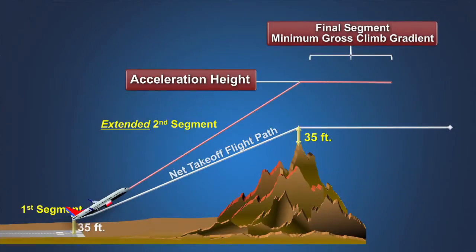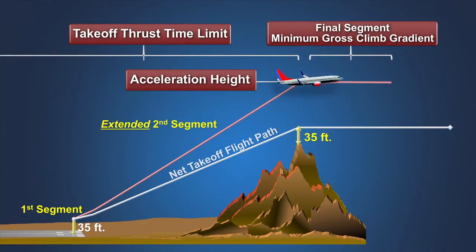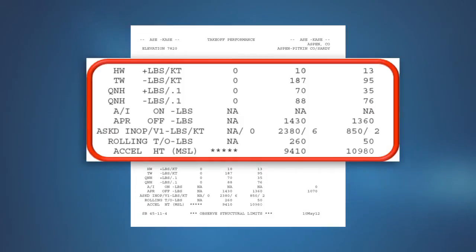Still other airplanes are capable of an extended second segment climb, where the airplane is assumed to continue climbing at V2 with takeoff flaps to the end of the takeoff thrust limit, and the transition segment is then completed using maximum continuous thrust. To use this option, it must be demonstrated that the airplane is capable of meeting the minimum gross climb gradient requirement for the final segment at the designated acceleration height with takeoff flaps extended and maximum continuous thrust. Using data furnished in the AFM, the engineer determines weight limit additions or subtractions applied to the runway limit weight to account for headwind or tailwind component, non-standard atmospheric pressure, engine bleed and ice protection configuration, and so forth.